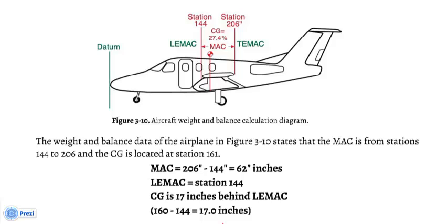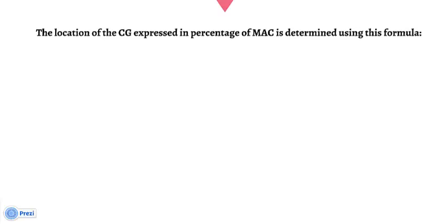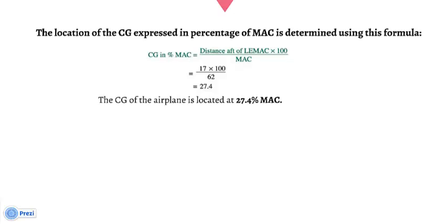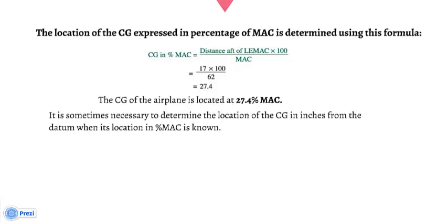MAC equals 206 minus 144, equals 62 inches. LEMAC equals station 144. The CG is 17 inches behind LEMAC: 161 minus 144. The location of the CG expressed in percentage of MAC is determined using this formula: CG in percent MAC equals distance aft of LEMAC times 100, all over MAC. The values will be 17 times 100, all over 62. The answer is 27.4. The CG of the airplane is located at 27.4 percent MAC.